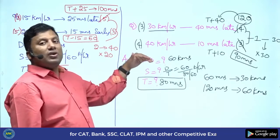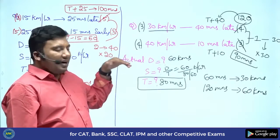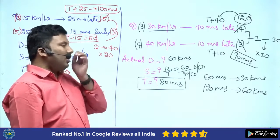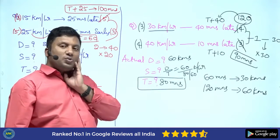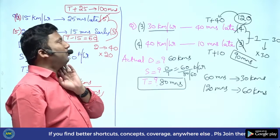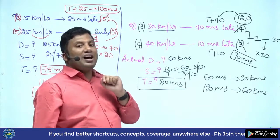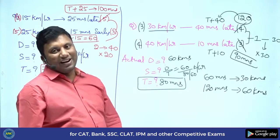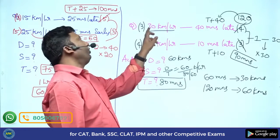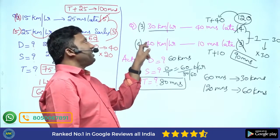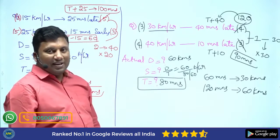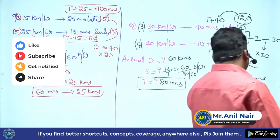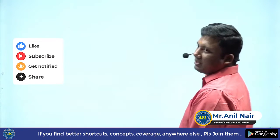I hope the idea is crystal clear — how to find actual distance, actual speed, and actual time. Now, when I was teaching this problem at IIT Delhi some years back, one student asked: what if the speed values are not given exactly? How will you solve it? That is a very good question.